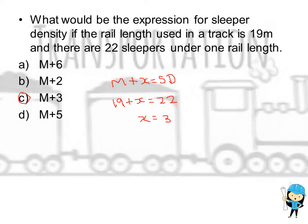What would be the expression for sleeper density if the rail length used in a track is 19 meters and there are 22 sleepers under one rail length? We have an equation that M plus x equals sleeper density. So 19 plus x equals 22. Therefore x equals 3, and the equation will be M plus 3.